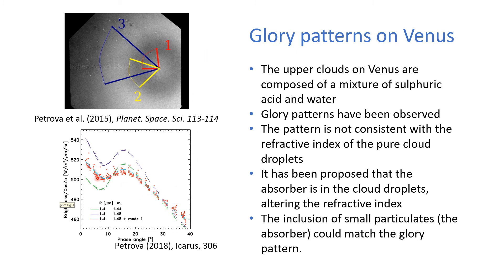If we compare the observed pattern — these red dots here — to what we'd expect from the cloud droplets, or even droplets with a slightly higher refractive index — these green and purple lines — you can see that they don't match. However, if small particles are included in the droplets, then we get this blue line here, which matches really well with the observations. This suggests that the mode one particles, the absorber, are also inside the cloud droplets.